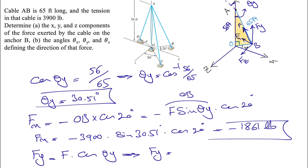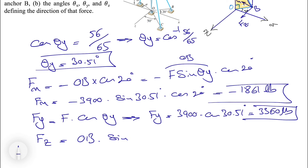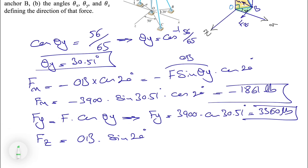For finding the y-component, since we already have theta_y, Fy simply equals F times cos(theta_y). It will be positive since it's in the positive y-direction. So we have 3900 times cos(30.51°), which gives us 3360 pounds for the y-component.